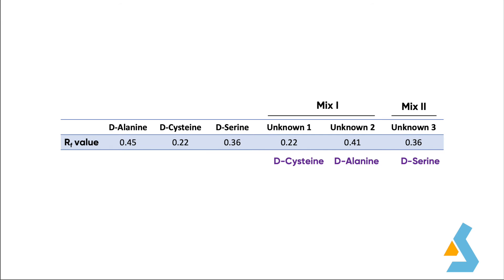We tabulated our findings for comparison. As the retention factors for both D-cysteine and unknown compound 1 were identical, we identified this unknown compound as D-cysteine. The RF value for unknown compound 2 was very similar to that of D-alanine. So, we identified unknown compound 2 as D-alanine.